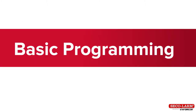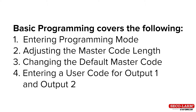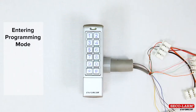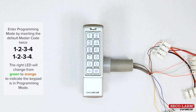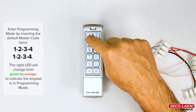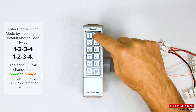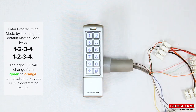Basic programming covers the following: how to enter programming mode, adjusting the master code length, changing the default master code, and entering a user code for output 1 and output 2. To enter programming mode, insert the default master code — which is 1234 — twice. The right LED will change from green to orange to indicate that the keypad is now in programming mode.